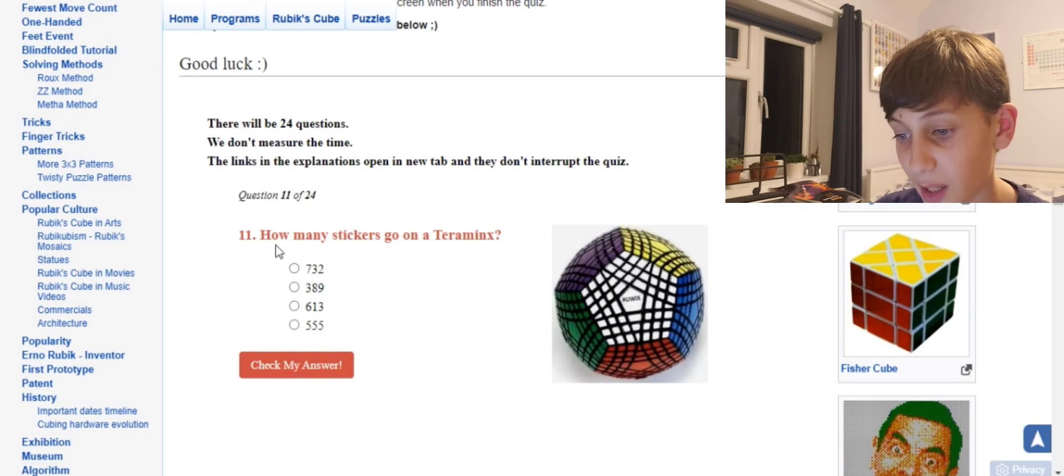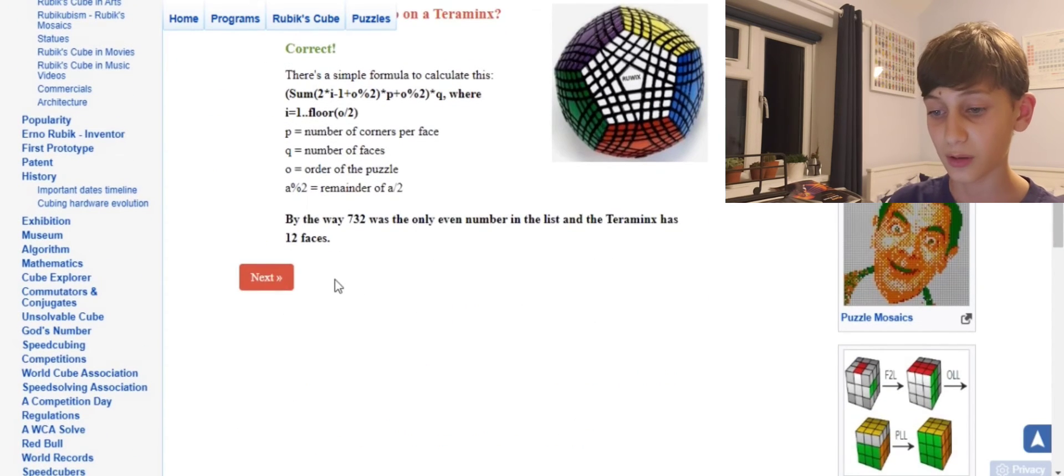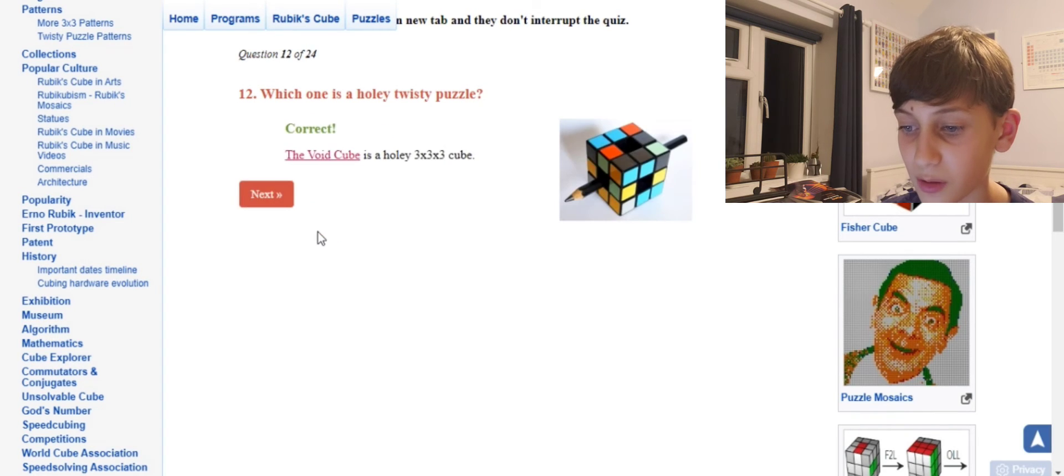Okay, how many stickers go on a Teraminx? Oh, that's 732 because it's the biggest number and it's very big. Which one is a holy twisty puzzle? Hollow twister, I mean that's got too many letters so it can't be. I think it's void cube because that's the only one that I know. Correct!